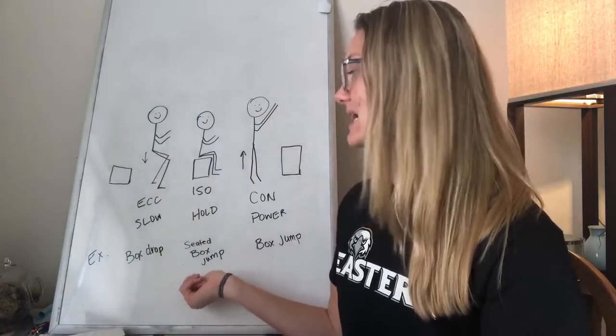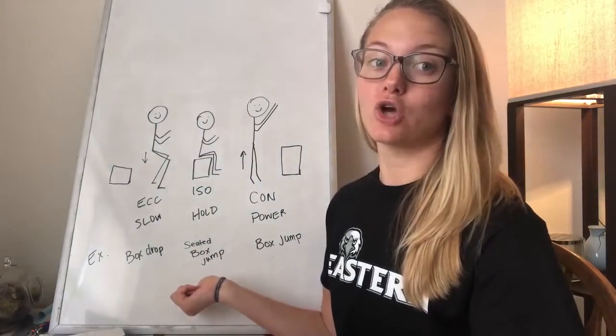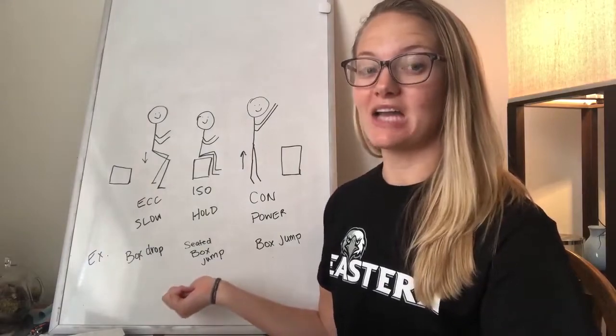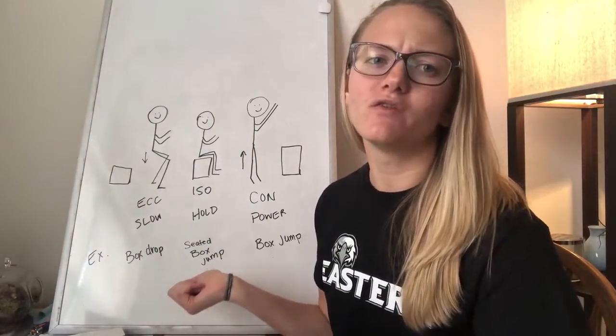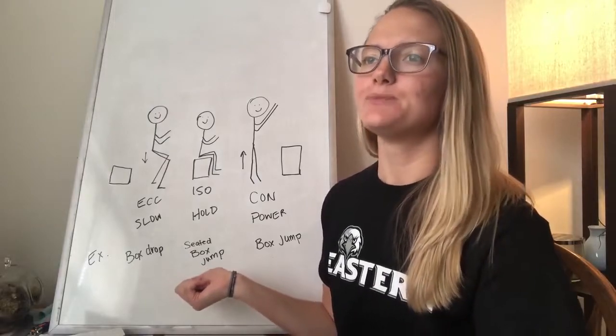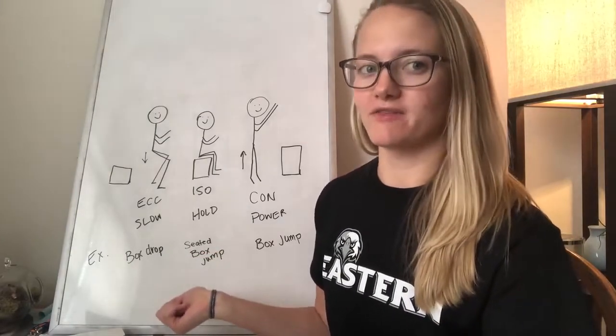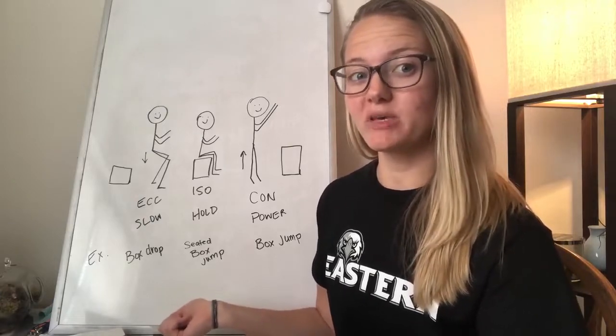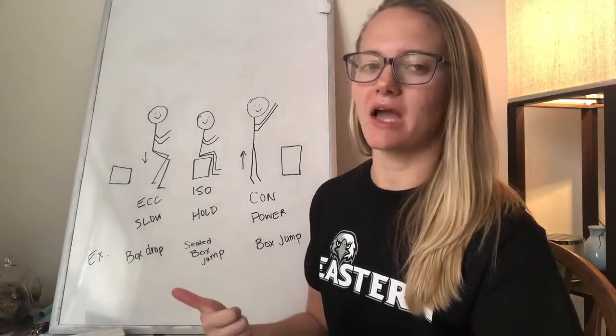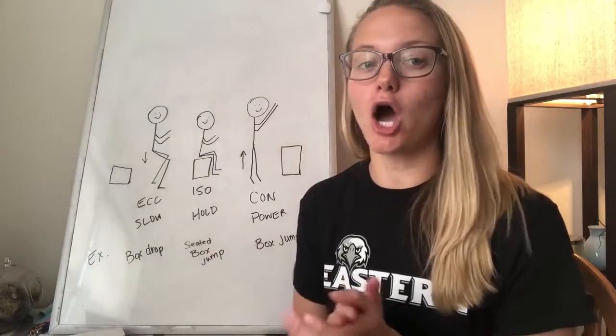Then if you want to practice an isometric where you're starting from a standstill and you're being powerful from that position, this would be really good for somebody who is slow coming out of the blocks. And this can also be used as a reaction drill. Because if somebody's slow coming out of the blocks, if you say go jump,